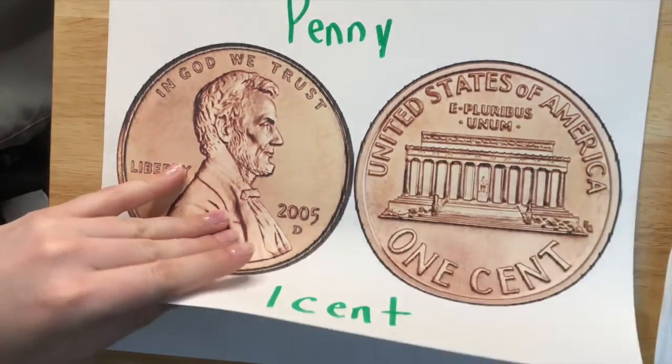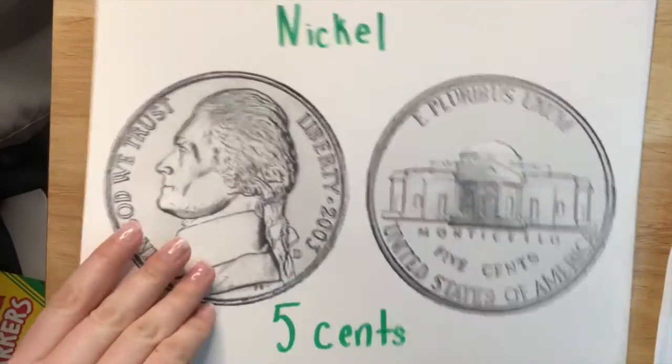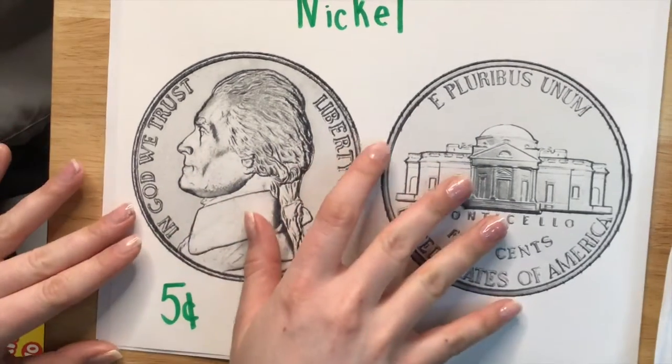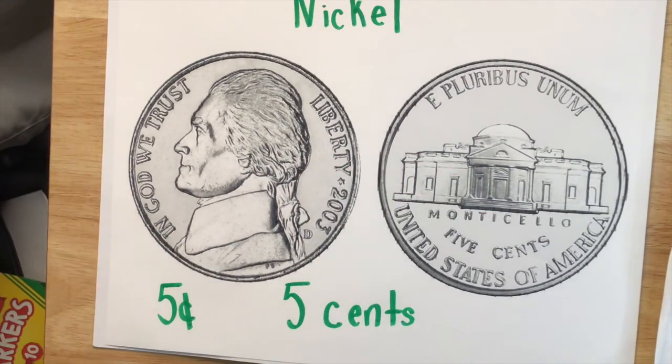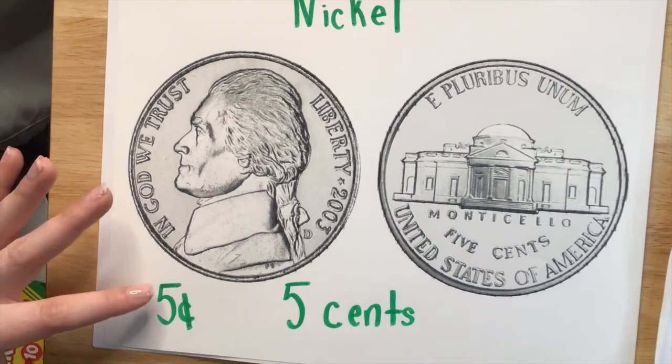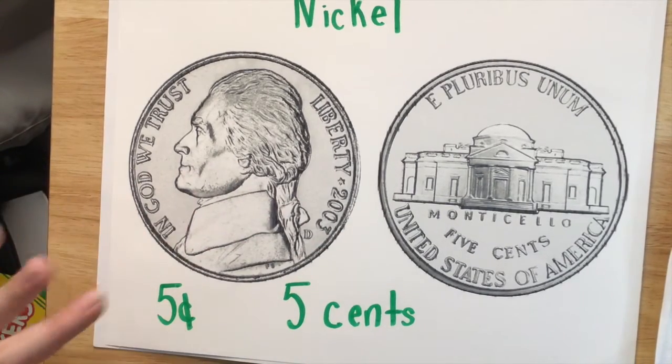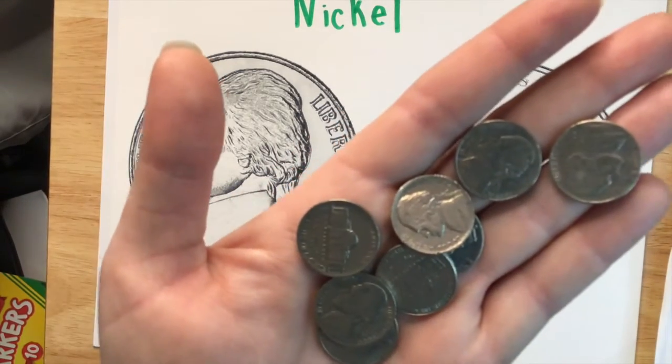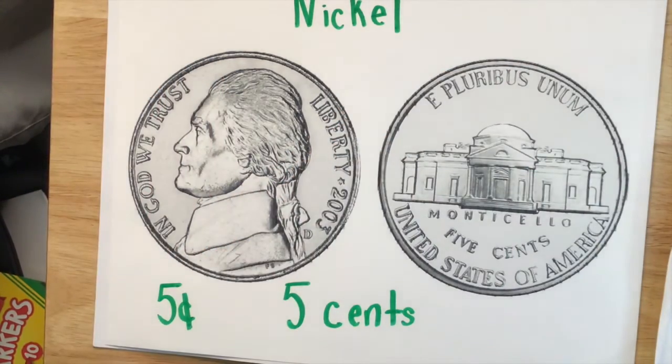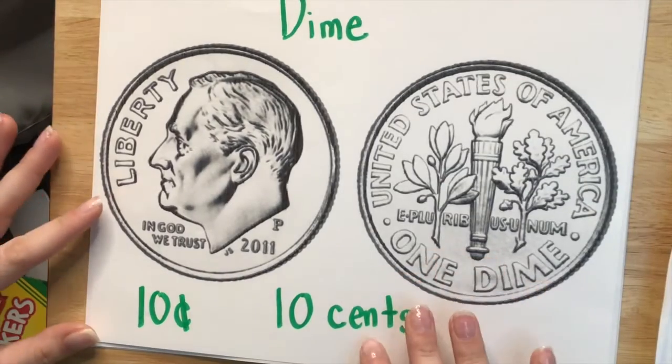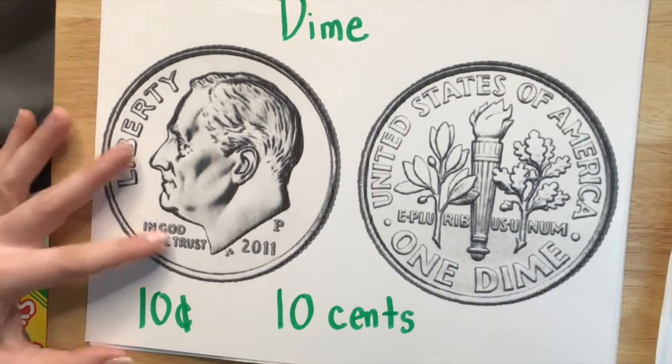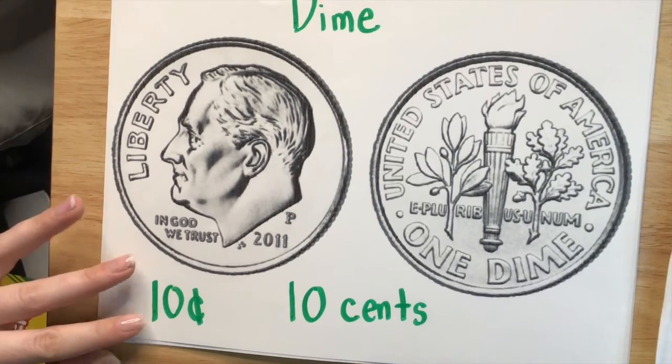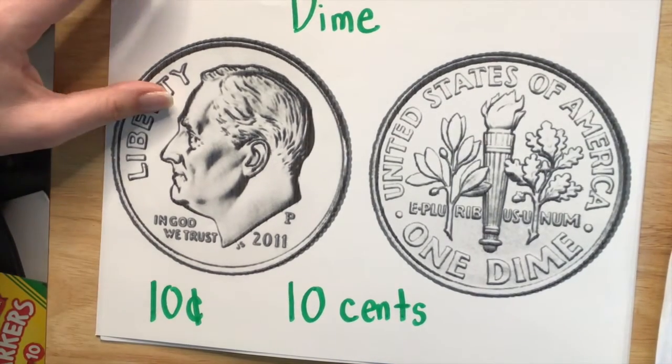So now let's look at a nickel. This is a nickel. This is the heads and the tails of a nickel. A nickel is worth five cents. Again writing five cents and then five with the c and the line through it is another way to write that. Here's a couple of real nickels not blown up that you can see. Then here's a picture of the last one we're going to be learning about today which is a dime. A dime is worth ten cents. Again the front and the back of the dime and another way to write that is the ten with the little c through it making it ten cents.